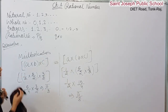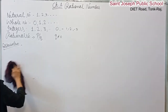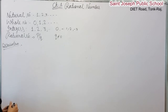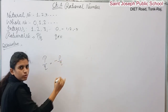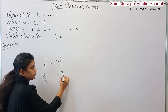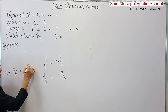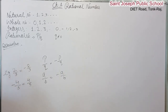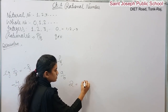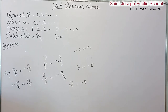Now we will see additive inverse. Additive inverse means: if we have a positive number, its additive inverse is the corresponding negative number. For example, 2 by 3 is positive, so its additive inverse is minus 2 by 3. Similarly, 4 by 5 and minus 4 by 5, and minus 6 and plus 6 are additive inverses of each other.